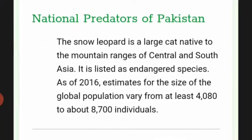The national predator of Pakistan is the snow leopard, a large cat native to the mountain ranges of Central and South Asia. It is listed as an endangered species. As of 2016, estimates for the size of the global population vary from at least 4,080 to about 8,700 individuals.